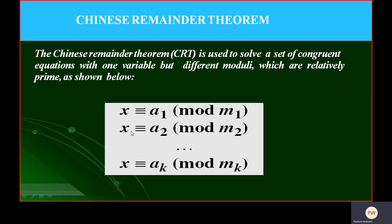There is only one variable like X. But there are different moduli M1, M2, up to MK. So there are different moduli, which are relatively prime.